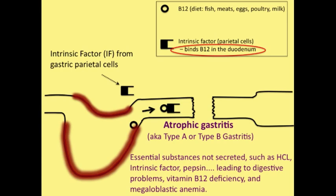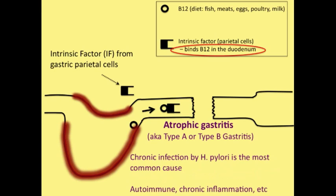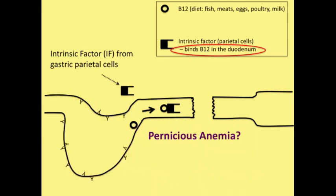This is going to lead to digestive problems, vitamin B12 deficiency, and megaloblastic anemia. Another take-home point from this discussion is the most common cause of atrophic gastritis is due to H. pylori infection. Secondary to that is autoimmune and other things that cause chronic inflammation.